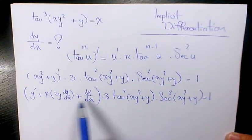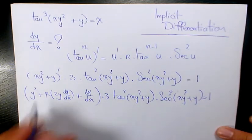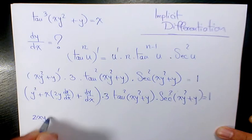Now I keep these two here and I move this to here and I move this one to the other side. So it's going to be 2xy + 1.